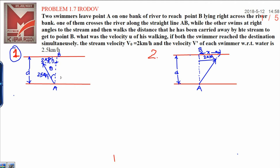Dear students, today I am going to discuss question number 1.7 from IE Irodov. This problem will help you solve problems based on river and boat systems in relative motion. Two swimmers are there, one is A and another is B.